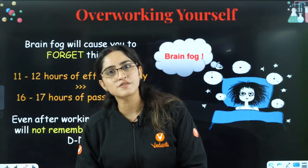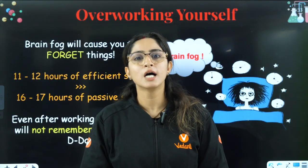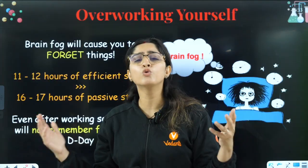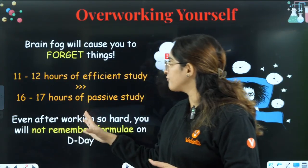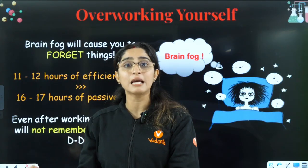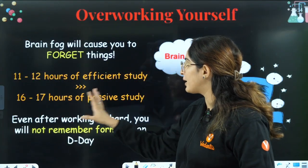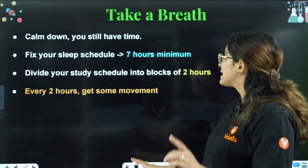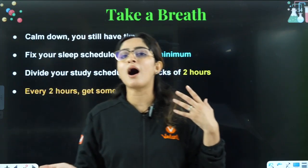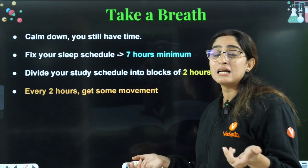The fourth mistake is overworking yourself. Students proudly say they've studied 18 hours, but the question is — do you remember anything? Can you retain it? Don't create the illusion of studying 18 hours just to show someone. Even if you study 10 to 11 hours of dedicated study where you remember and understand every concept, that is better than 17 to 18 hours of passive study. Always ensure a minimum of seven hours of sleep and divide your schedule using the Pomodoro technique — study for two hours, relax for 15 minutes, study for one hour, relax for 10 minutes.